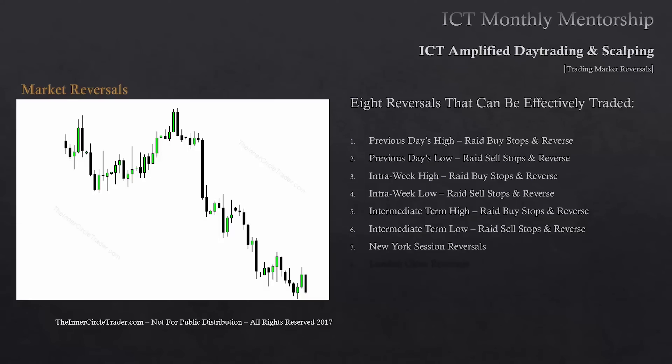New York session reversals. When we look at the New York session, generally it's a continuation — the characteristic I like to view first and foremost is that it's a continuation of what was already established in London. If London was a bullish rally making the low of the day, I'm going to be first looking for signs of continuation going higher from New York's open into London's close. But there are instances where London created the low of the day, it rallies up into New York, but then New York reverses and goes lower, ending with a lower close on the day.